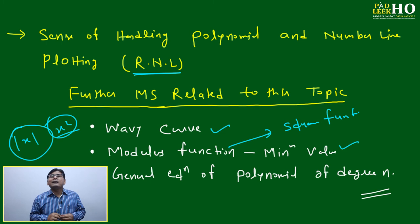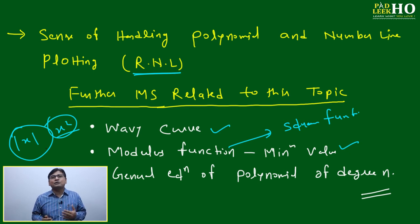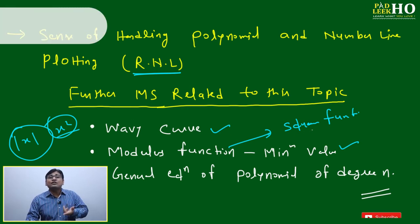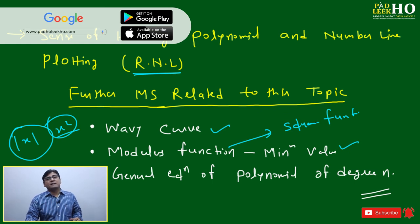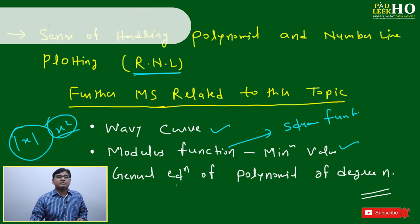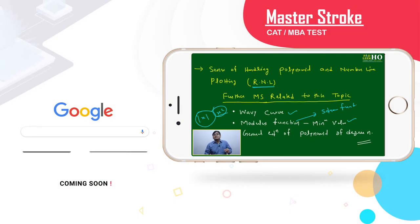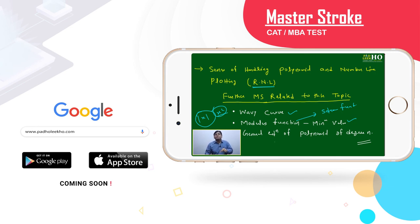Modulus function and a-squared function are mathematically the same in terms of nature — both always give a positive output. Whatever technique we discuss about the modulus function will also be valid for the a-squared function, and for general polynomials of degree n. This master's talk has reconnected algebra with number patterns and other algebra topics. Once you solve algebra questions using these concepts, you will feel much more comfortable.